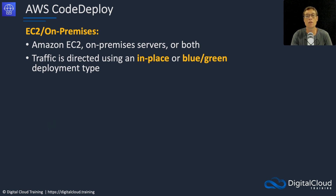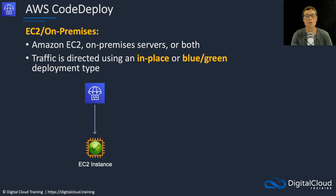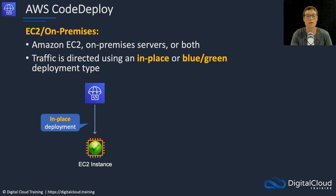Let's look at what these two deployment types look like. With in-place deployment, CodeDeploy sends an update, takes the EC2 instance out of action, deploys the code, and then the instance is back again. In this case, the actual running instance — the one running your code, which could be a production application — has had the code updated while it's running.